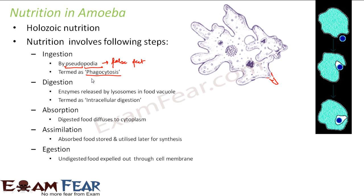Intake of food by amoeba with the help of pseudopodia is known as phagocytosis. In the picture, it is shown how the intake of food happens: the cytoplasm extends itself around the food particle and the particle gets enclosed. As a result, a food vacuole is formed, and then food is absorbed from that food vacuole. So ingestion takes place with the help of pseudopodia, and the process is known as phagocytosis.